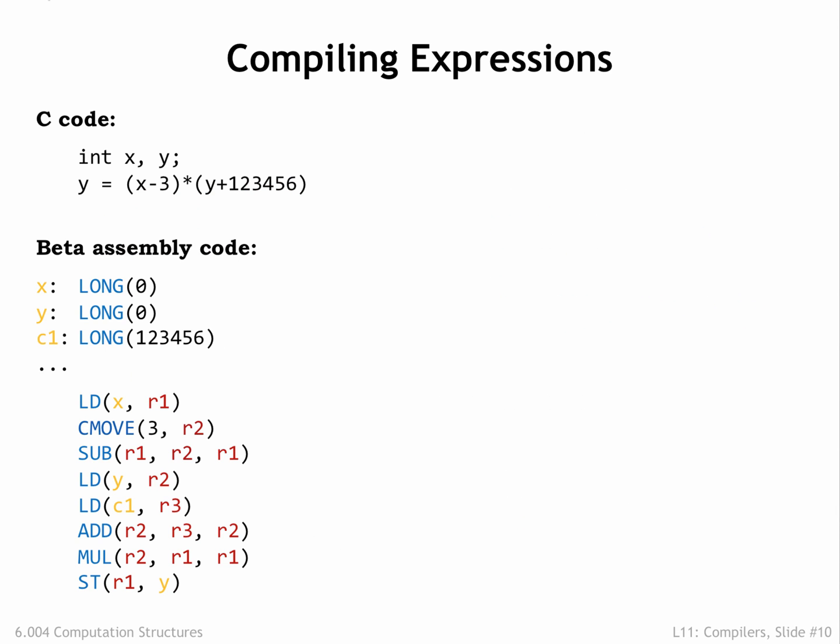Let's look at an example to see how all this works. Here we have an assignment expression that requires a subtract, a multiply, and an addition to compute the required value. Let's follow the compilation process from start to finish as we invoke compile expression to generate the necessary code. Following the template for assignment expressions from the previous page, we recursively call compile expression to compute the value of the right-hand side of the assignment.